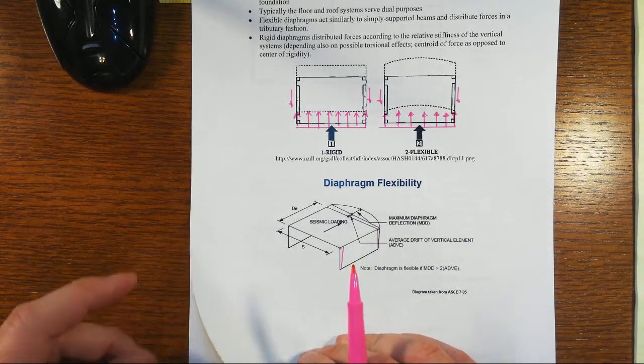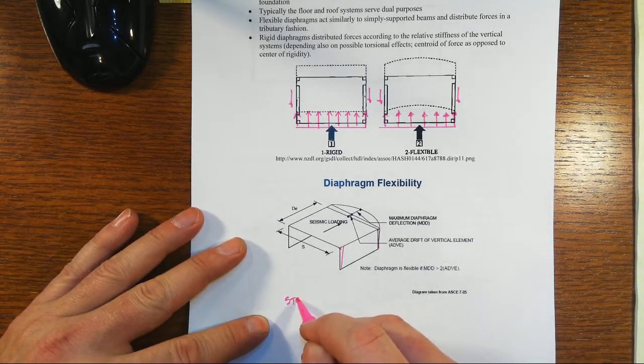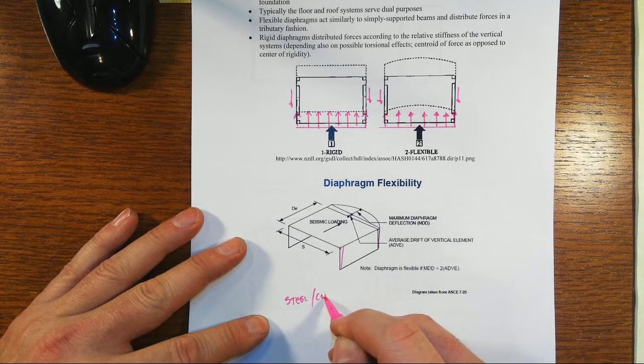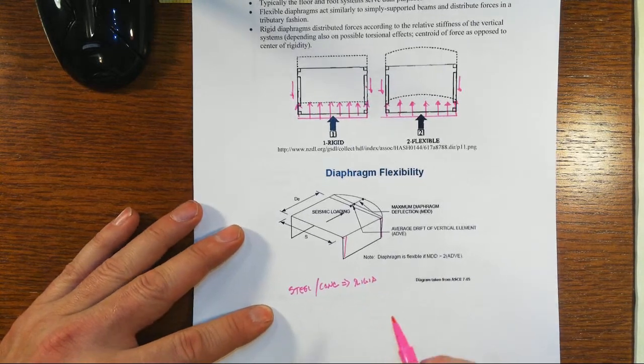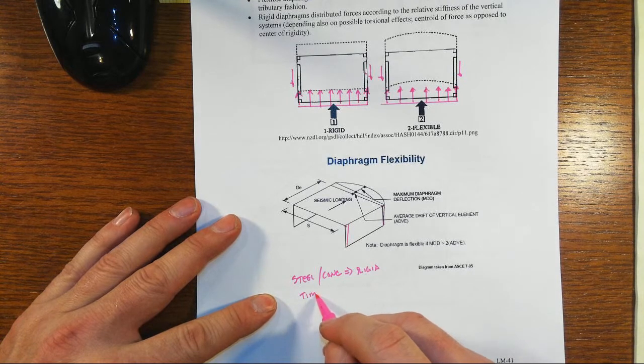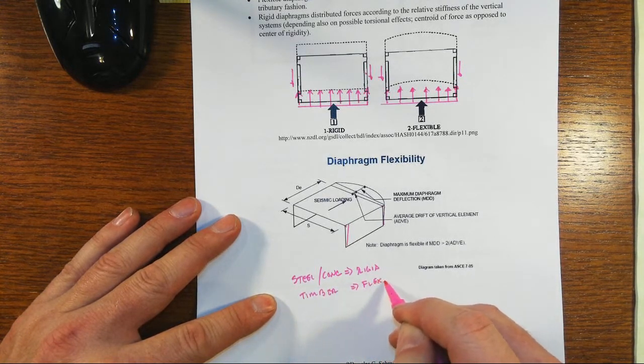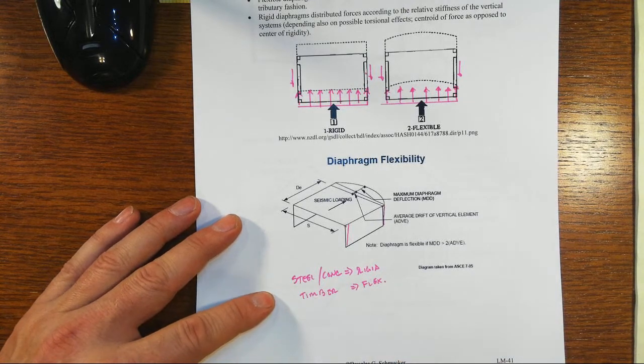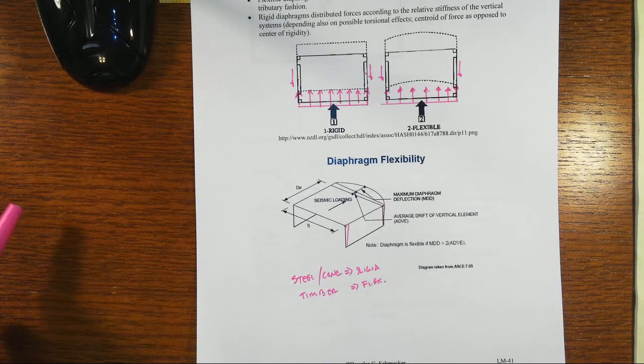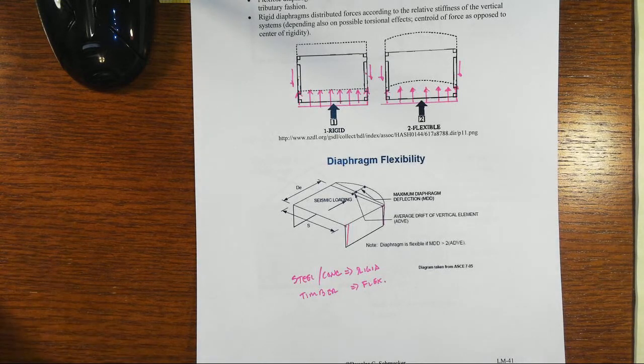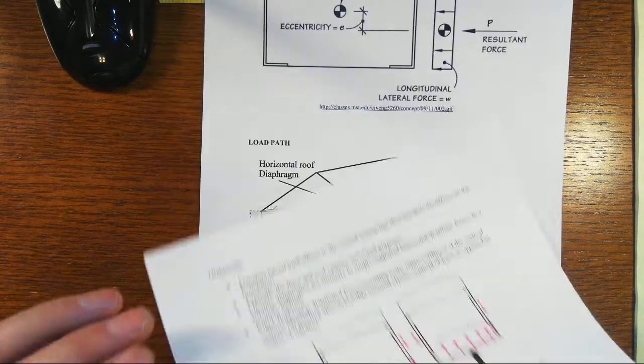Otherwise, it's acting or behaving more like a rigid one. Again, typically steel and concrete would tend to be on the rigid side of diaphragms versus the timber would tend to be usually on the flexible side. The caveat to that is that it depends on how you've made your steel diaphragm. It's quite possible that could also be a flexible, and this is the kind of calculation that you would know.